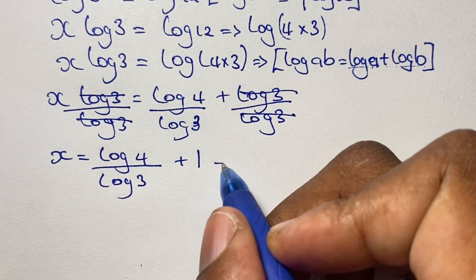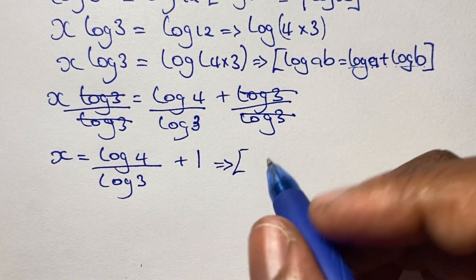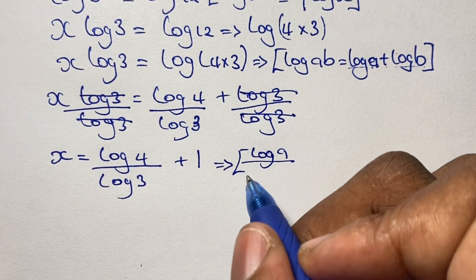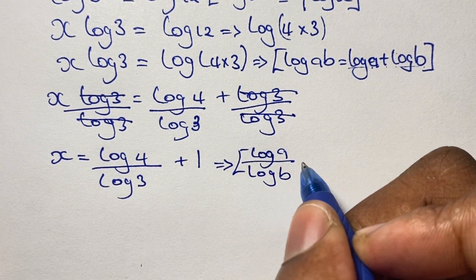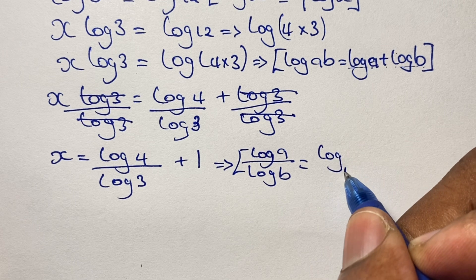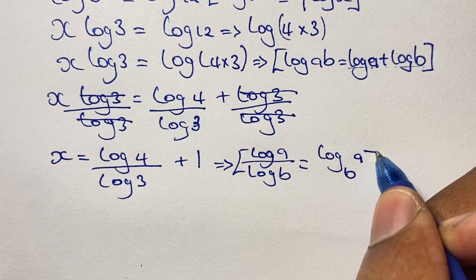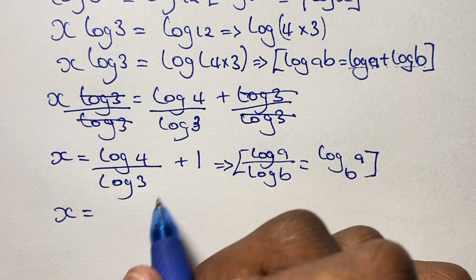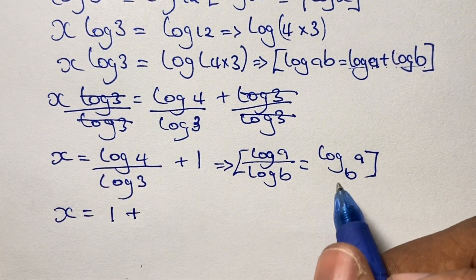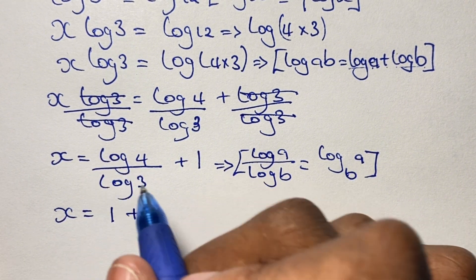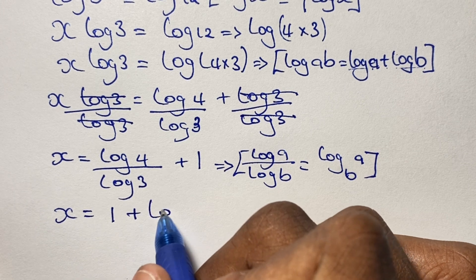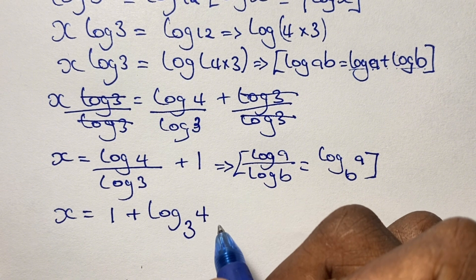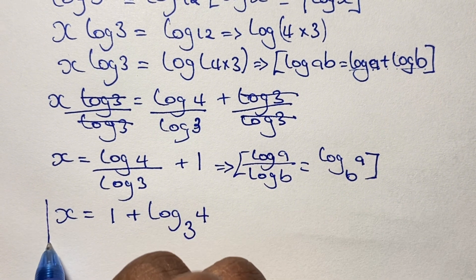This is the answer for x, but we can simplify it using another logarithm rule that states that log a over log b is equal to log base b of a. So we write our answer in this form. Our solution for x is: x equals 1 plus log base 3 of 4. This is our final solution for x.